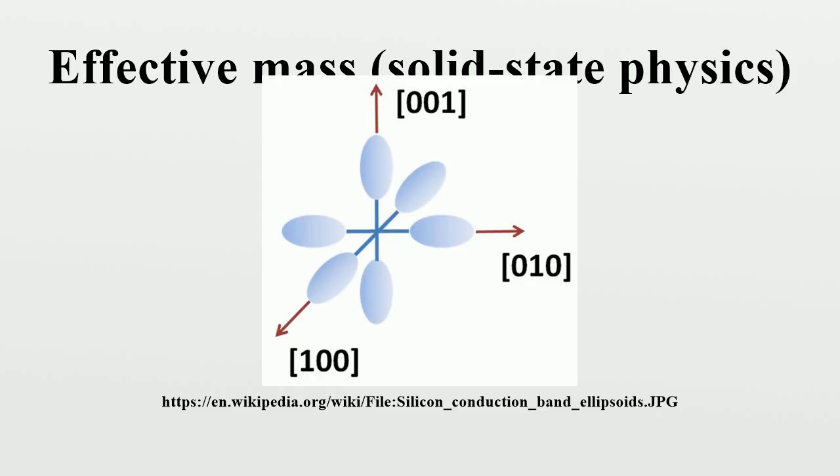The name density of states effective mass is used since the above expression for NC is derived via the density of states for a parabolic band. In practice, the effective mass extracted in this way is not quite constant in temperature. In silicon, for example, this effective mass varies by a few percent between absolute zero and room temperature because the band structure itself slightly changes in shape. These band structure distortions are a result of changes in electron-phonon interaction energies, with the lattice's thermal expansion playing a minor role.